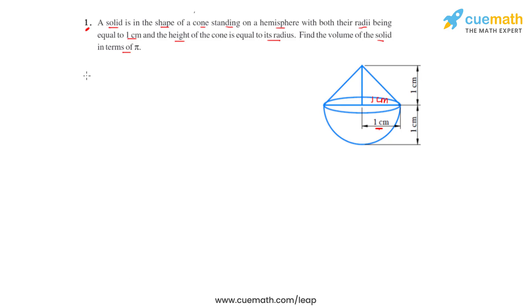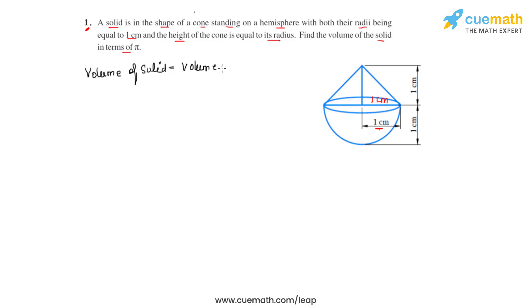Now to find the volume of the solid formed, we can find the volumes of the cone and the hemisphere and add them to get the total volume. So we write: volume of solid equals volume of cone plus volume of hemisphere.